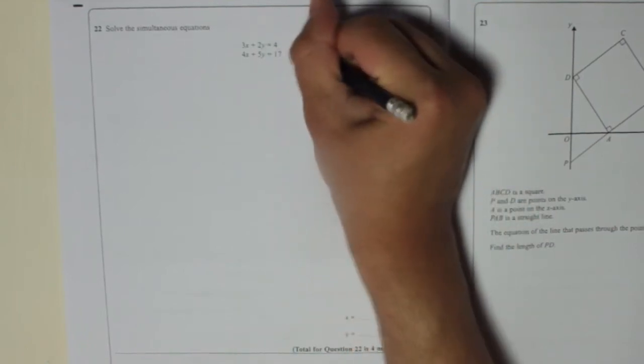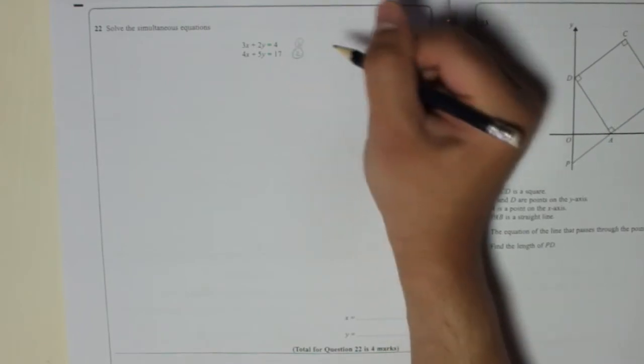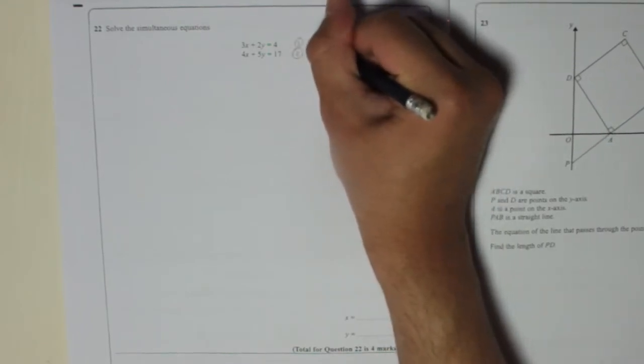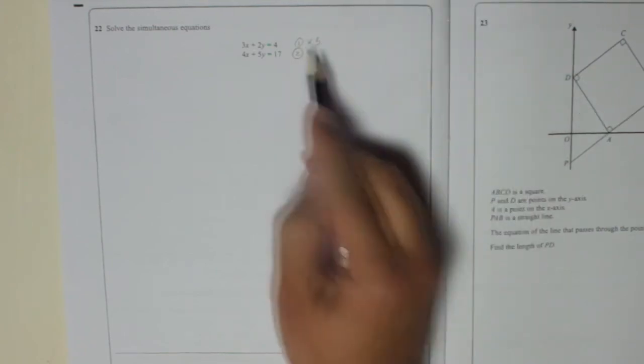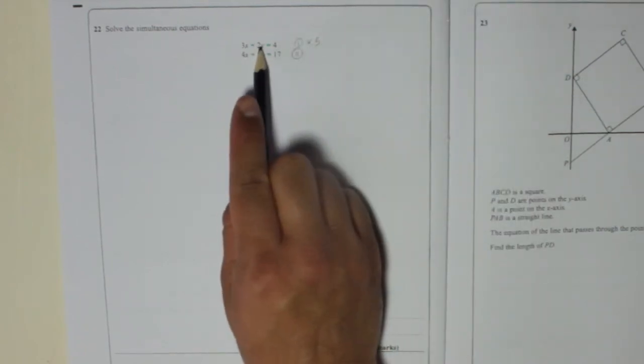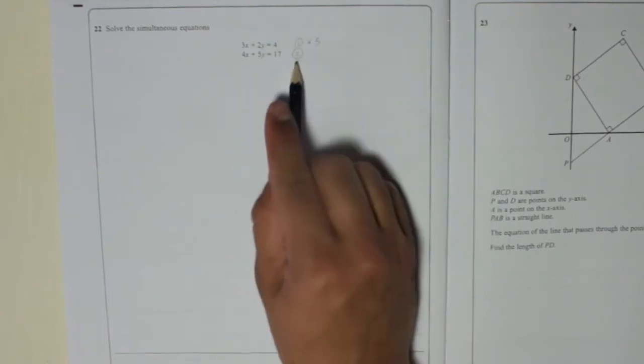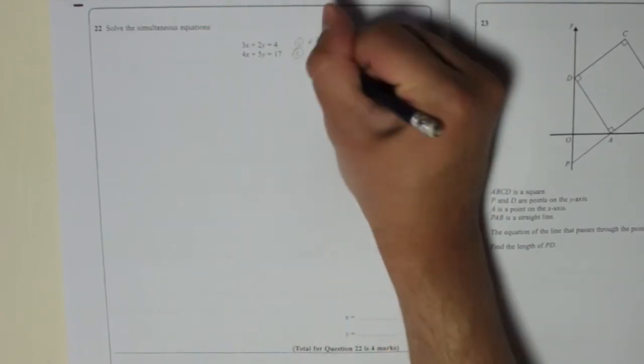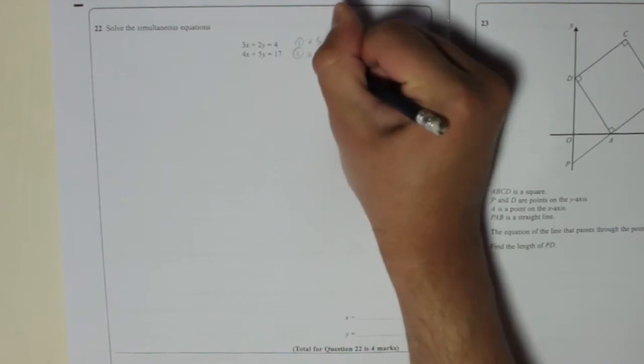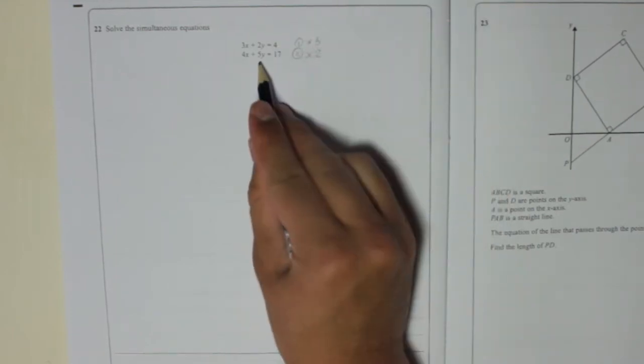So I'm going to call this number 1 and that number 2. And I'm going to take number 1 and I'm going to times it by 5. That means you're going to times that by 5, that by 5, that by 5, and that'll give us 10y's. And I'm going to take number 2 and I'm going to times that one by 2, because that'll give us 10y as well.